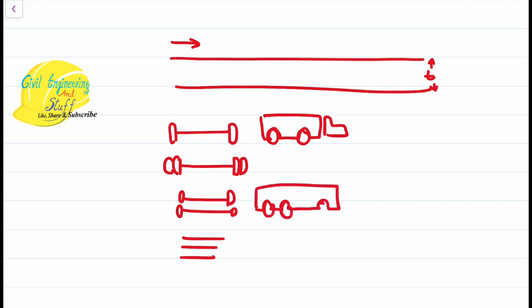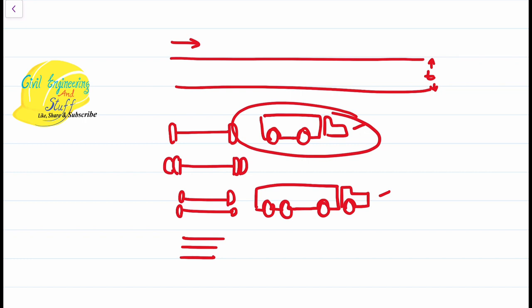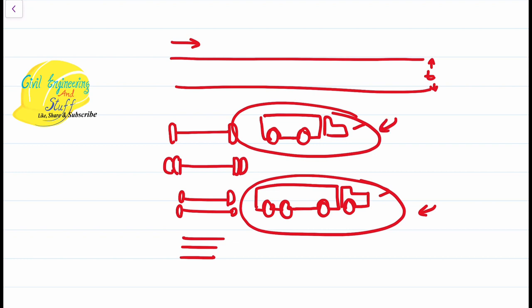For the sake of example, let us consider two vehicle types only. The weight of a single-axle single-wheel vehicle will be much lighter than a tandem vehicle. Both are commercial vehicles used to carry goods. Let us say the weight of the lighter vehicle is P2 and the heavier tandem vehicle is P1, where P1 is greater than P2.